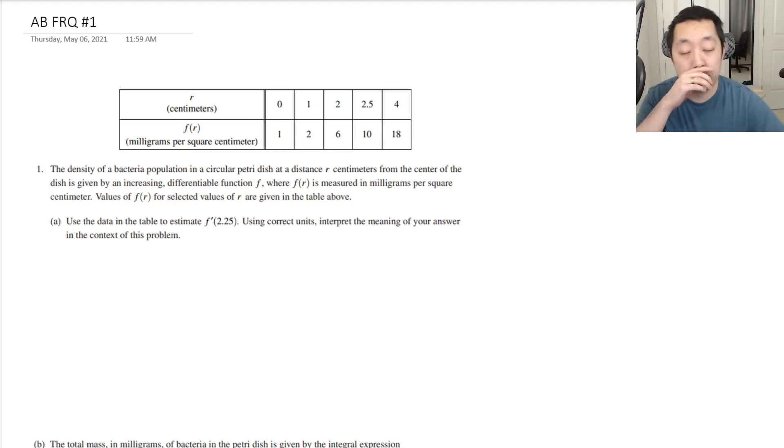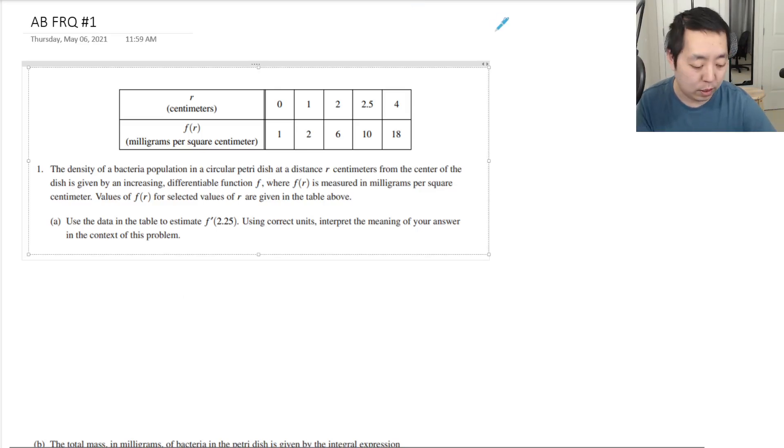All right, here we go. Calculus AB, FRQ1. I don't know which ones on the BC exam this might be, so this might be some BC problems. As usual, I'll put any corrections in the description below if you guys point any out or if I realize I made a mistake with something. I'll also have a link to the PDF solutions in the description below. I'm a little behind on getting those up, but yeah, let's just take a look.